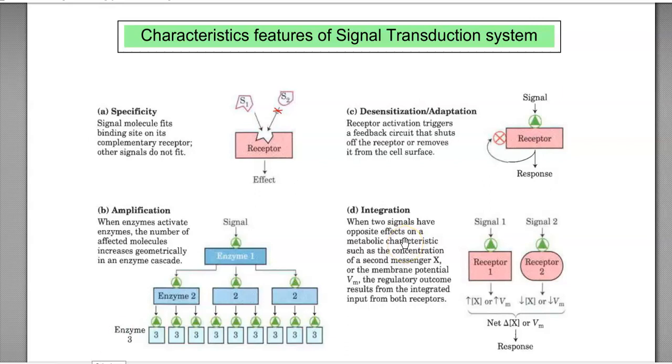The third point is desensitization or adaptation. The receptor activation triggers a feedback circuit. Say the receptor is getting activated by the signal. As a result, the cellular response is happening. At the same time, the receptor triggers a feedback circuit. This feedback circuit shuts off the receptor or removes it from the cell surface. So because of the feedback, the receptor has been removed from the cell surface, and the whole process is getting desensitized or further formation of the products will be lowered.